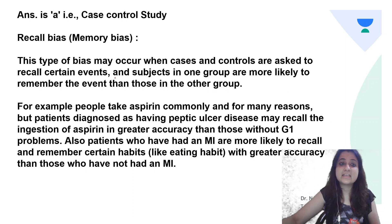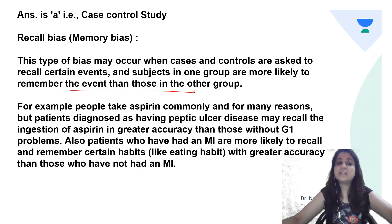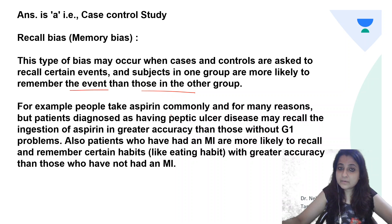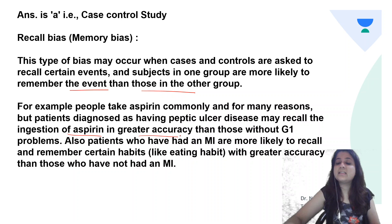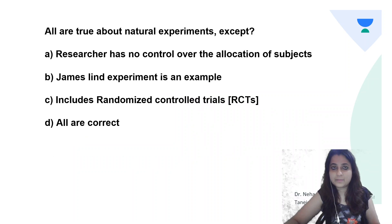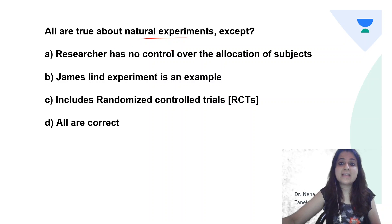Recall bias, also called memory bias, occurs when cases and controls are asked to recall certain events and subjects in one group are more likely to remember that event than the other. For example, patients diagnosed with peptic ulcer disease may recall their ingestion of aspirin with greater accuracy than those without any GI problem.